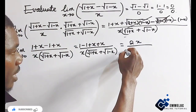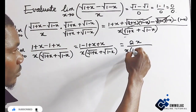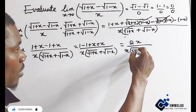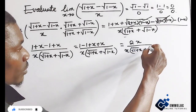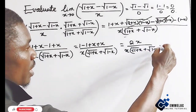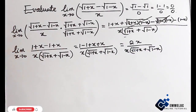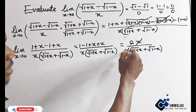We now have 2x over x times the square root of 1 plus x plus the square root of 1 minus x. We can eliminate the x from the numerator and denominator, simplifying the expression to its simplest form.